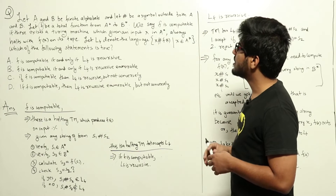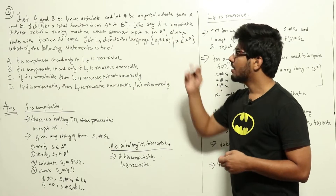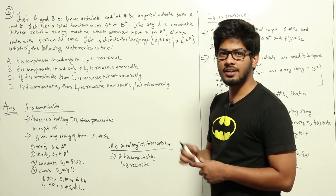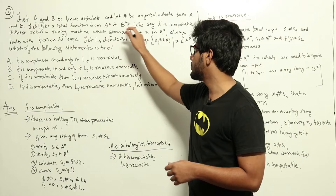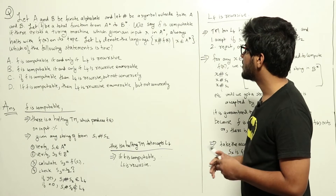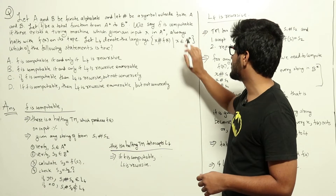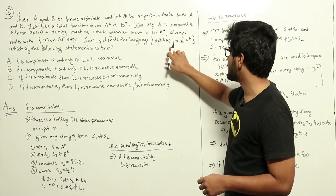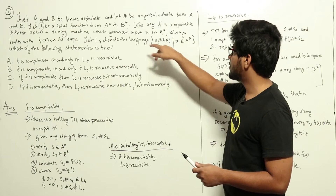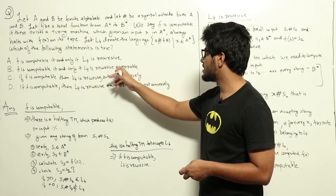We say f is computable if there exists a halting Turing machine which, given an input x in a-star, always halts with f(x) on its tape. If such a Turing machine exists that can calculate f(x) for any given x, we say the function is computable. They have also given us the language Lf, which contains strings of the form x hash f(x) where x belongs to a-star and f(x) belongs to b-star. The question asks about the relationship between computability of f and the recursive or recursively enumerable nature of Lf.